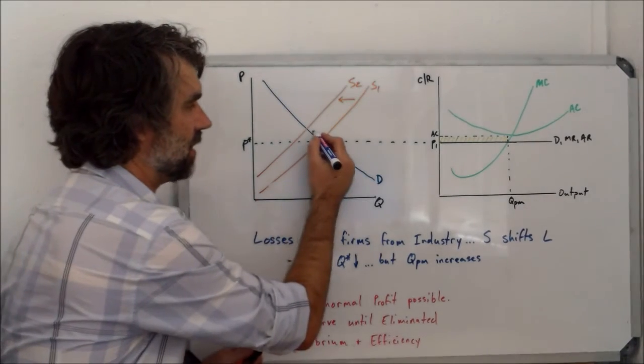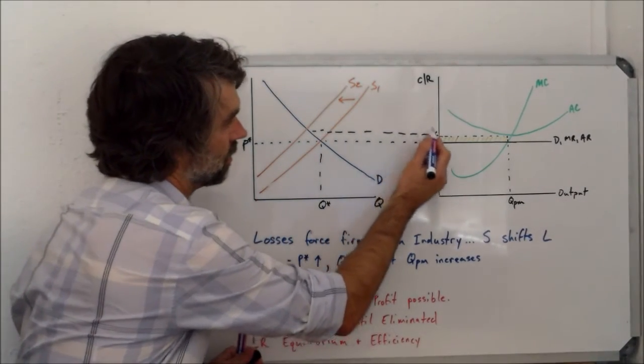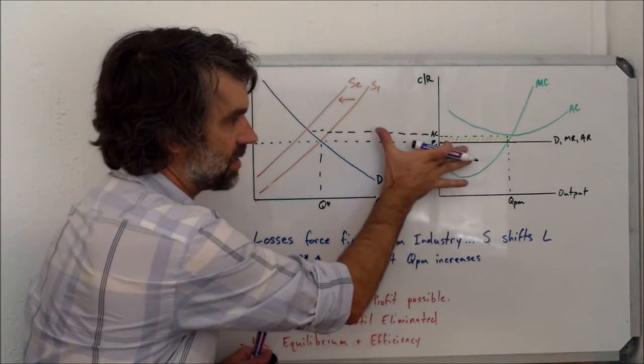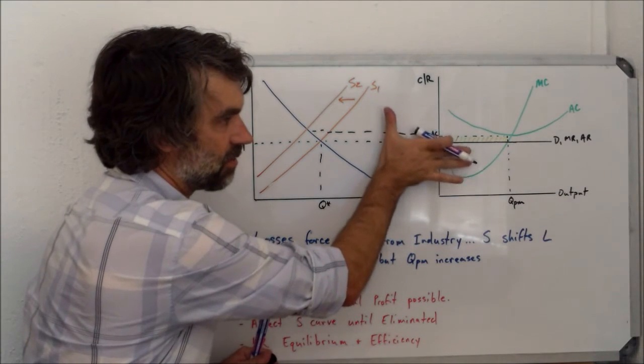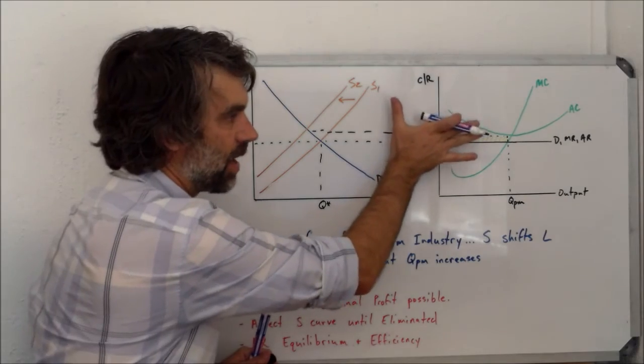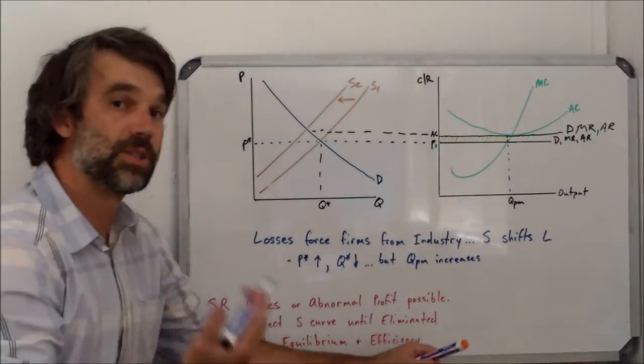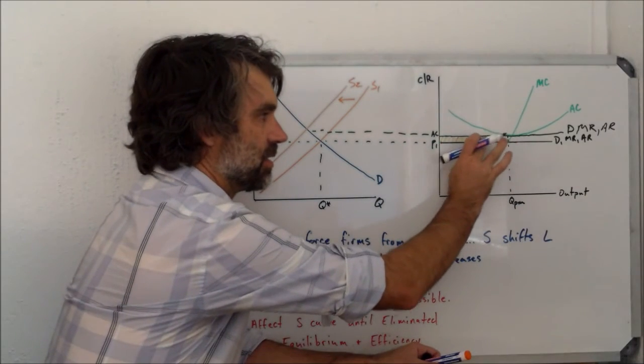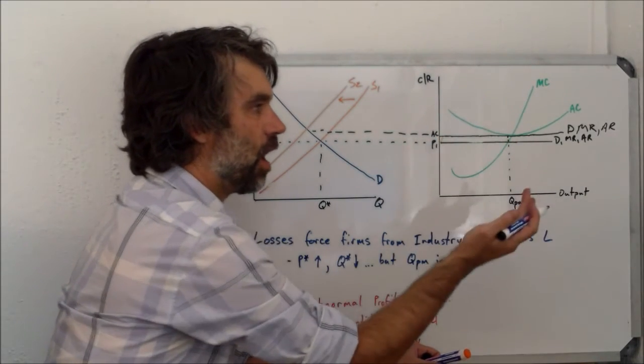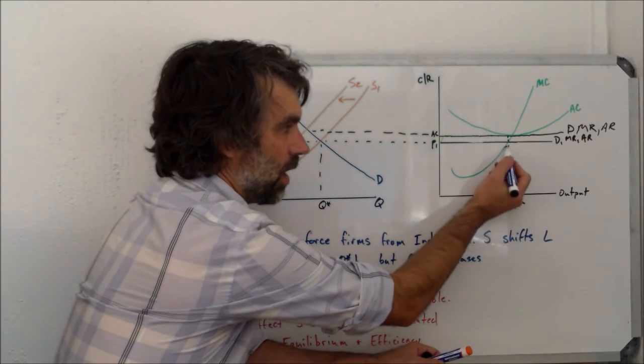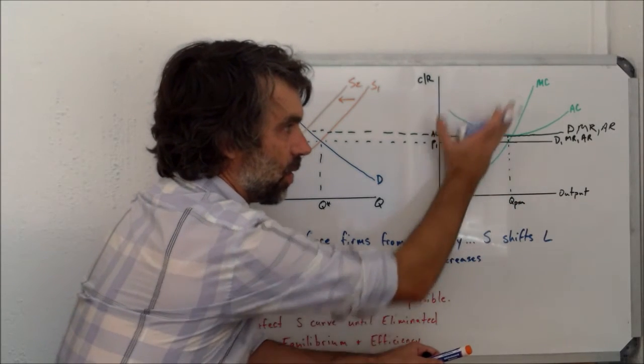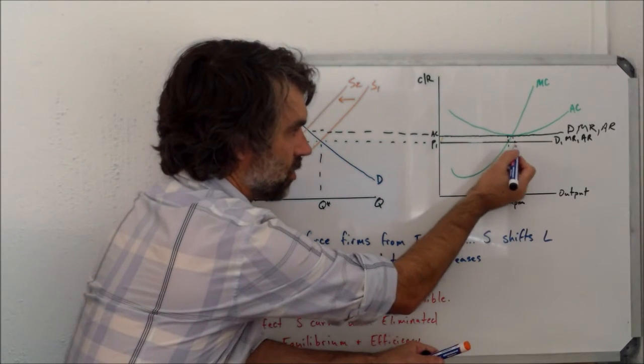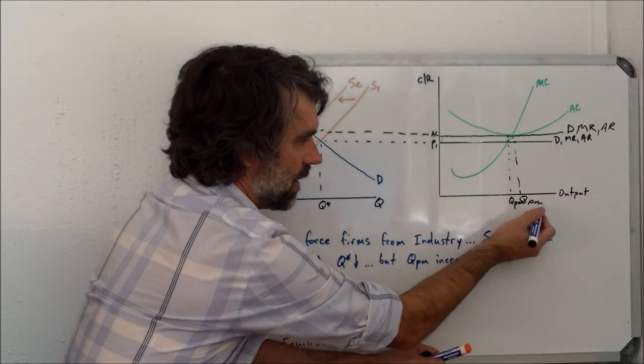That new price is going to be given to the firms, and what we're going to see is that the price that firms face is going to go up and up and up. So as that occurs, as this goes up, we're going to see these losses be eliminated. They're going to be gone. So as it goes up, we notice that we're going up the marginal cost curve because it has a positive slope. So that's going to cause QPM to move to the right.